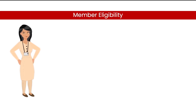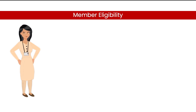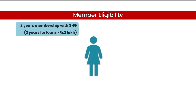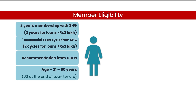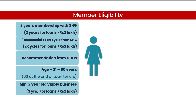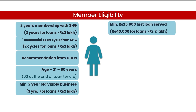Member Eligibility Criteria. For selection of a member for enterprise loan, the minimum criteria she must fulfil are as follows: 1. At least 2 years membership with SSG — this is 3 years for loan above Rs. 2 lakh. 2. Must have successfully repaid at least one cycle of SSG loan — this is 2 cycles for loan above Rs. 2 lakh. 3. Must have positive recommendation from the CBO. 4. Member's age should be between 21 and 60 years. 5. Business should be at least 2 years old running viably — this is 3 years for loans above Rs. 2 lakh. 6. Must have repaid at least Rs. 25,000 single loan from the SSG, not cumulatively — this is Rs. 40,000 for loans above Rs. 2 lakh.